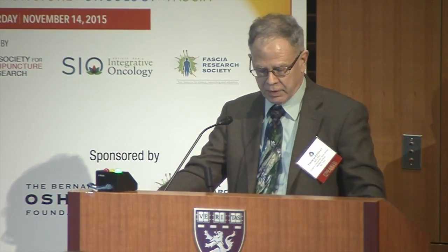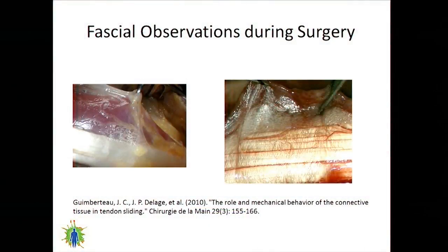Some fascinating fascial observations during surgery by Jean-Claude Gamberteau show nice little tendrils of fascia. Here's a muscle, here's a tendon, and you can see the fascia surrounding it. Tendons aren't just ropes in a tube — the tendon sheath is actually connected to the tendon with special structures that allow it to stretch, so the connection can stay there but stretch back and forth, kind of like the rope on a gasoline pump.